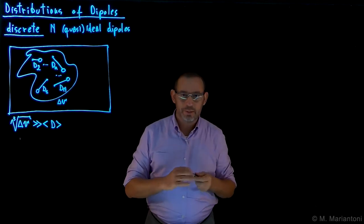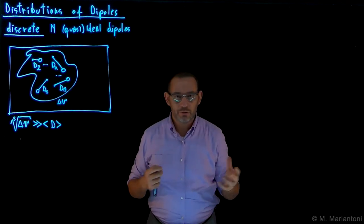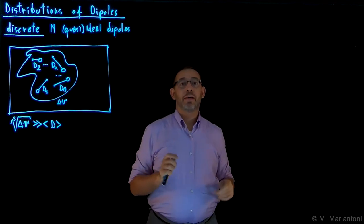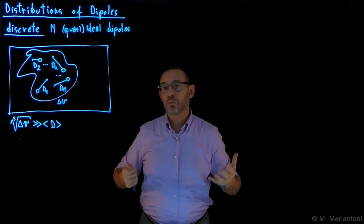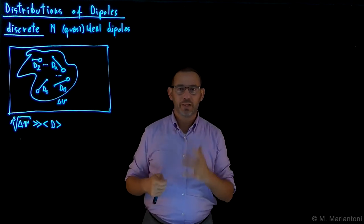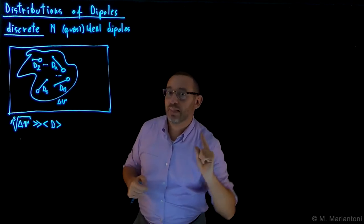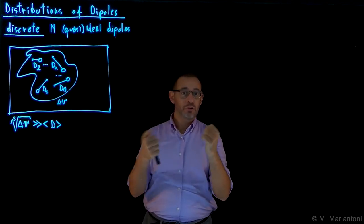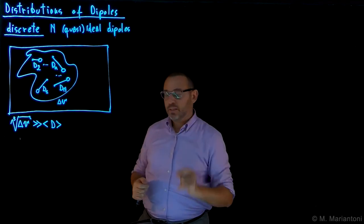Instead of considering a distribution of charges as we've done in 242, we now have a distribution of electric dipoles. In physics, a typical case where we have a distribution of dipoles instead of charges is electric materials — insulators — which are distributions of molecules with positive and negative charge, i.e., quasi-ideal dipoles. That is why this is important.